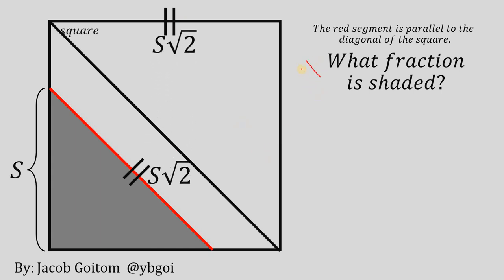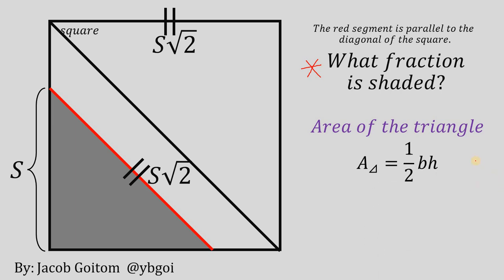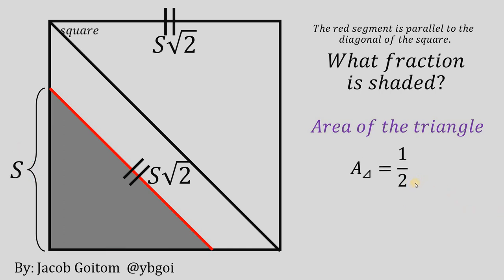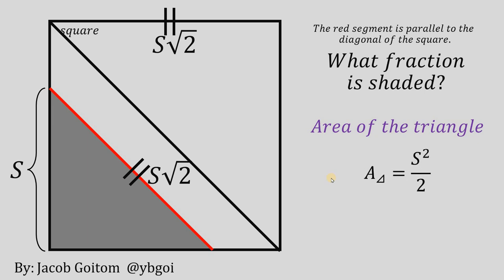To answer what fraction is shaded, we will get the area of the triangle, then the area of the square, and divide. The area of the triangle is given by the formula: one-half times base times height. The base of this triangle is S and the height is also S, so the area of the triangle equals one-half times S times S, which gives us S squared divided by 2.